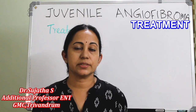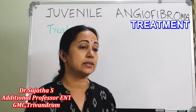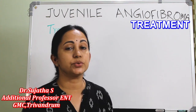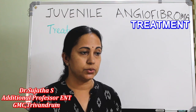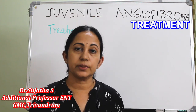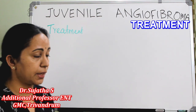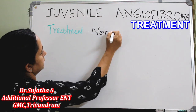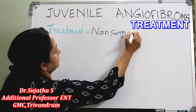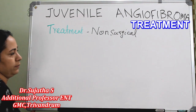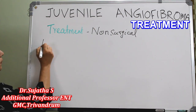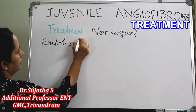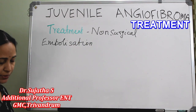Juvenile nasopharyngeal angiofibroma is now considered a surgical entity, and all other treatment modalities have only adjuvant treatment value. In non-surgical adjuvant therapy, the first option is embolization. This is usually done in the preoperative phase.